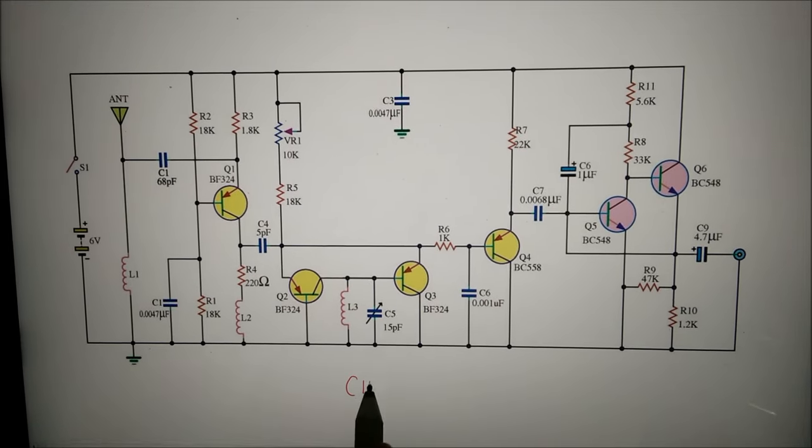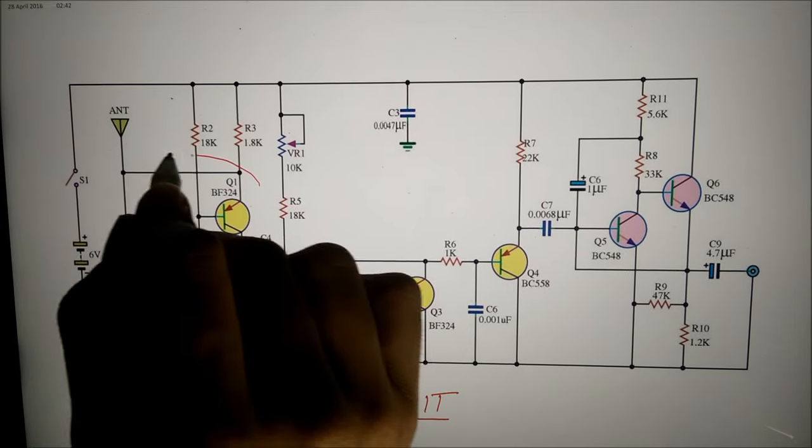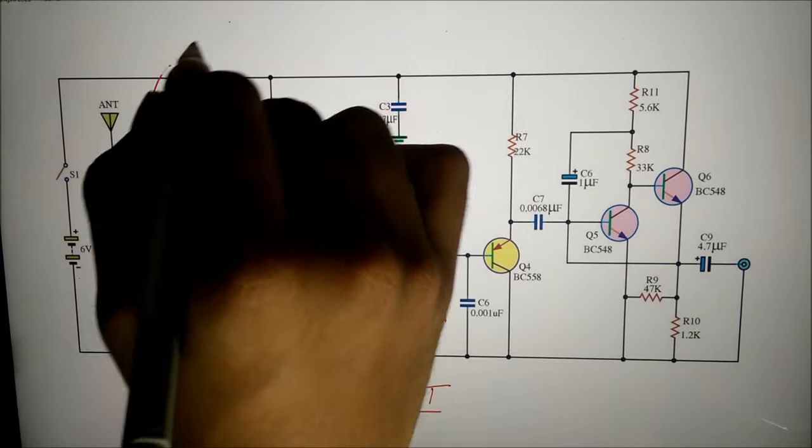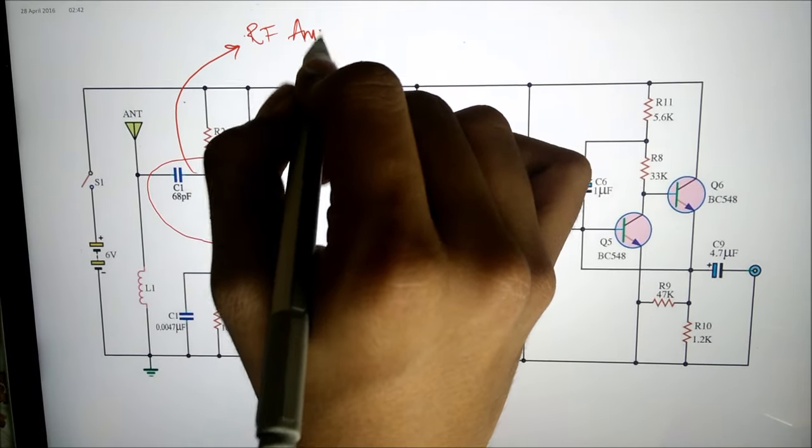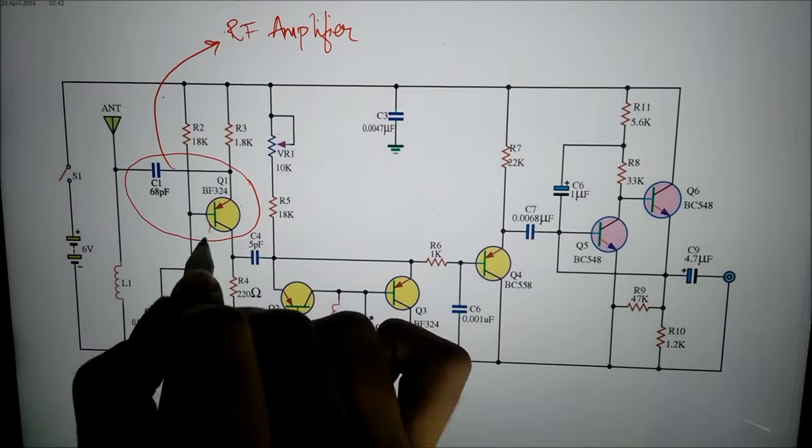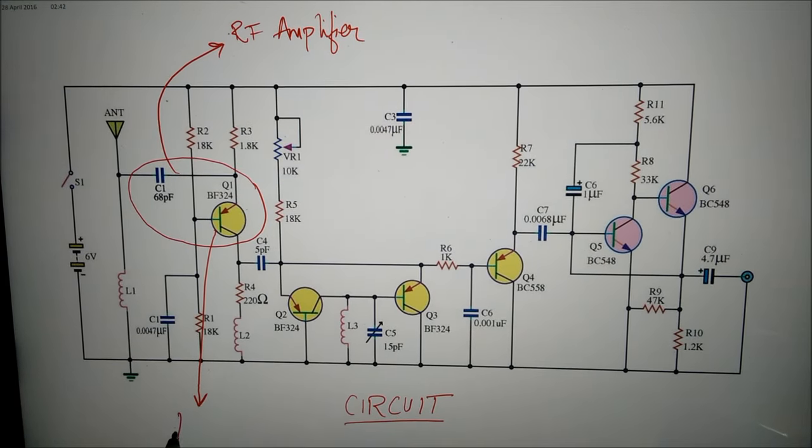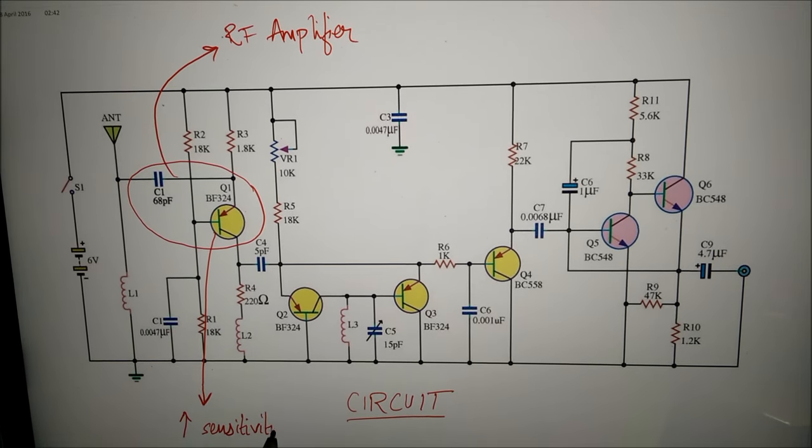So this is the actual FM radio receiver circuit. Here Q1 acts as a preamp extension of the frequency VHF range or the RF amplifier, which selects a band of frequencies from the incoming signal and amplifies them. We may remove Q1 and then connect the antenna at C4, but then the sensitivity of the circuit will decrease.